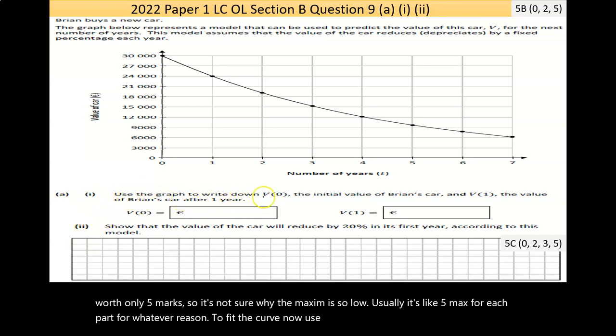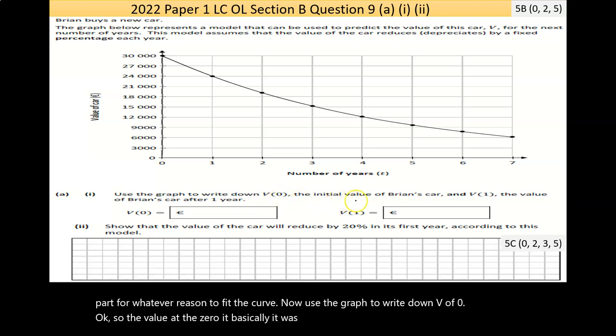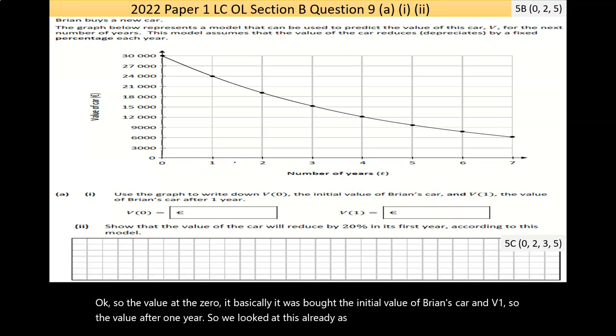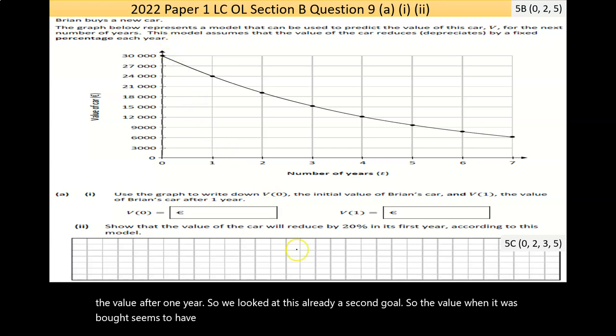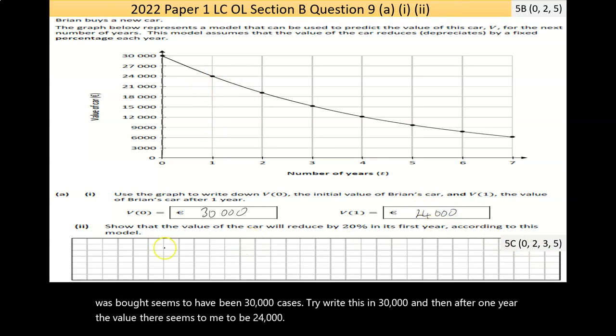Use the graph to write down V(0), so the value at zero, basically when it was bought, the initial value of Brian's car, and V(1), the value after one year. The value when it was bought seems to have been 30,000. So let's write 30,000. And then after one year, the value there seems to me to be 24,000.